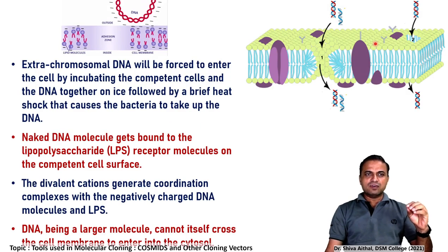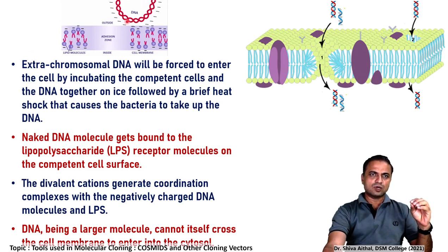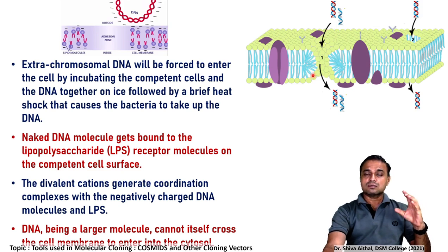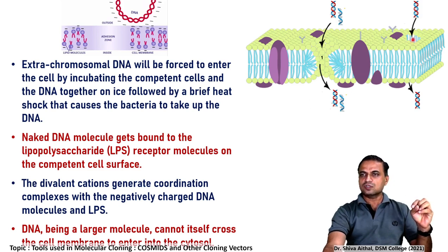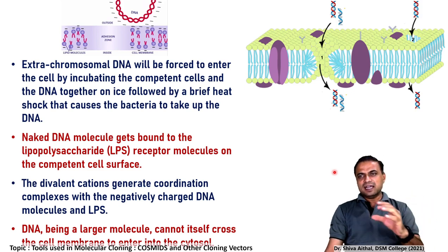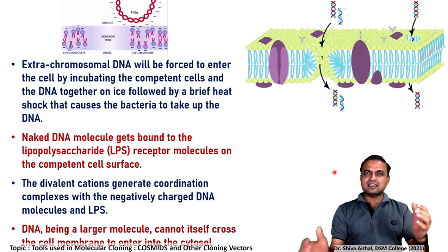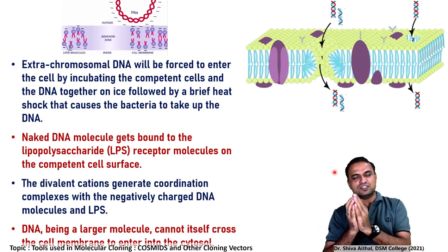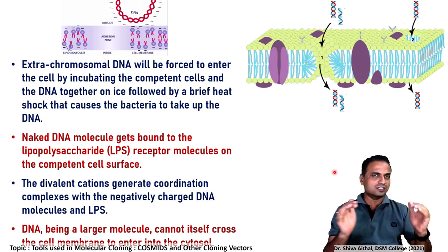Calcium ions create a coordination complex with the negatively charged DNA molecule and the lipopolysaccharide layer. Naked DNA molecules get bound to the lipopolysaccharide layer; if competent cells are present they are forced inside. The divalent cations generate a coordination complex between the negatively charged DNA and the lipopolysaccharide layer. DNA, being a larger molecule, cannot cross the cell membrane or enter the cytosol by itself — it has to be forced to enter, and that is done by this method using heat shock and cold shock. Extrachromosomal DNA is forced to enter the cell by incubating these competent cells and the DNA together.